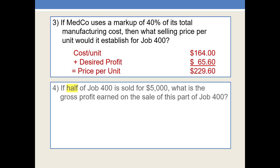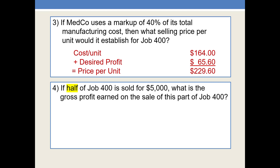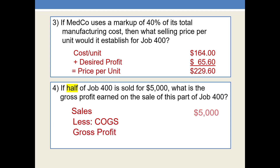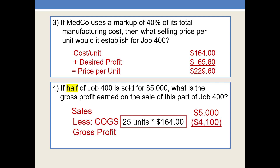Now the last thing we'll look at is: if half of Job 400 is sold for $5,000, what is the gross profit earned on the sale? Since Job 400 had 50 units in it, this means we sold 25 units, and we sold them for $5,000. If you do the math, that means we didn't quite get our $229.60 per unit, but we did in fact sell them for $5,000. We're going to calculate the cost of goods sold — that would be 25 units, half of the job, times the cost per unit of $164. Cost of goods sold is $4,100, and gross profit then is $900. So the cost per unit will also be used for the cost of goods sold calculation.